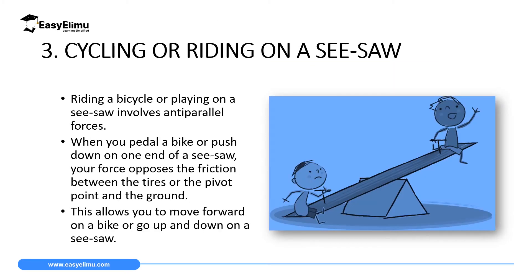Another application is in cycling. When you pedal a bicycle, one leg is moving up while the other is moving down, causing a turning effect — specifically a couple, because the force you use to pedal should be equal for both legs.